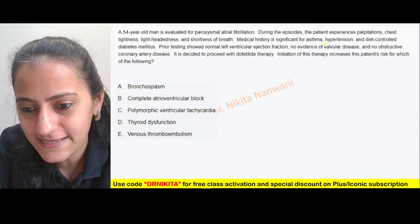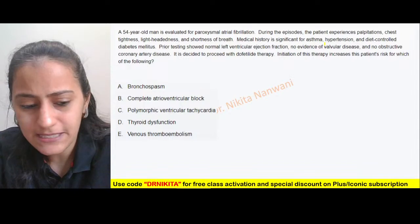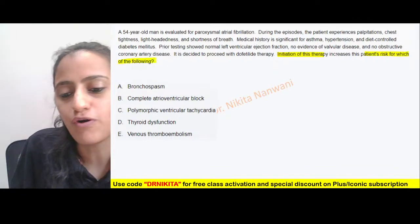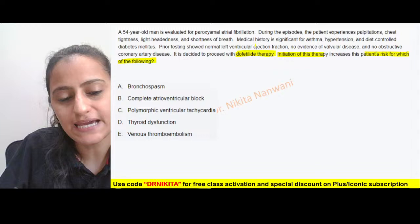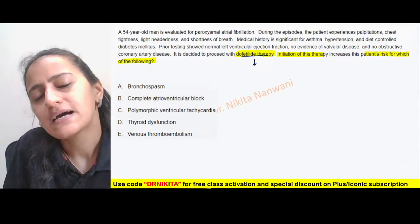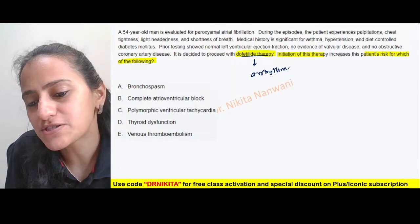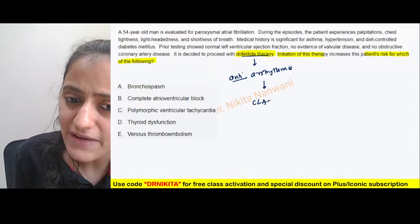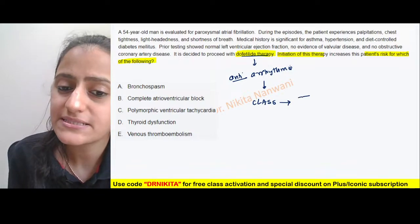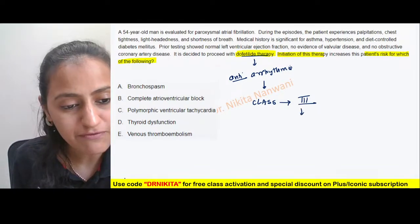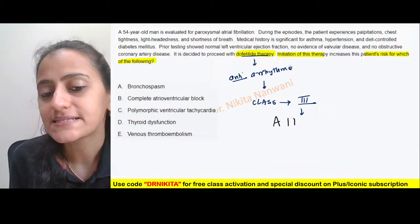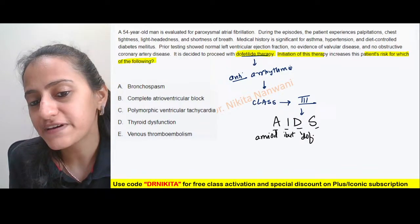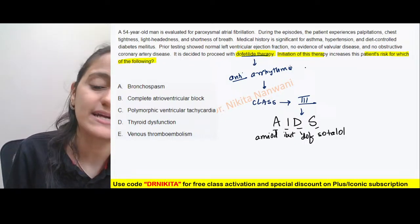I see many of you getting this right and some are confused between option A and option C. The last line asks: initiation of this therapy increases this patient's risk for which of the following? The therapy being started is dofetilide. So this question must be related to some arrhythmia because dofetilide is an antiarrhythmic drug. Tell me which class of antiarrhythmic drug is dofetilide? It is a class 3 antiarrhythmic drug.